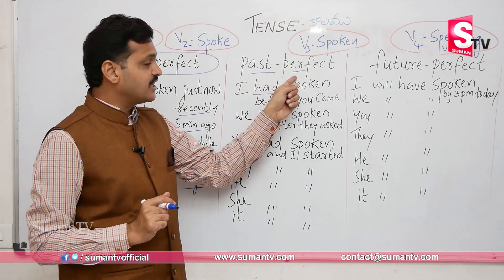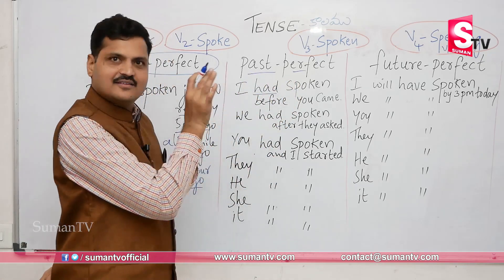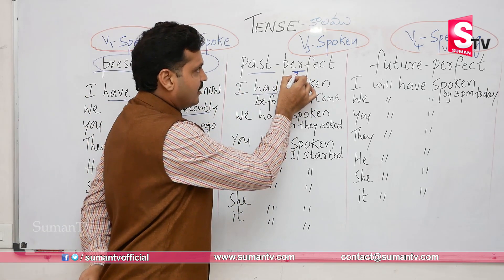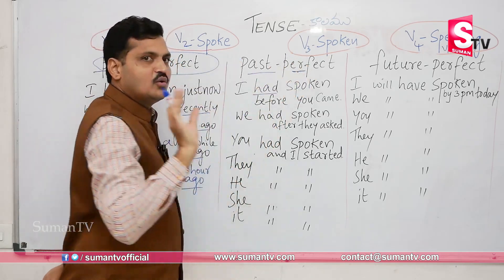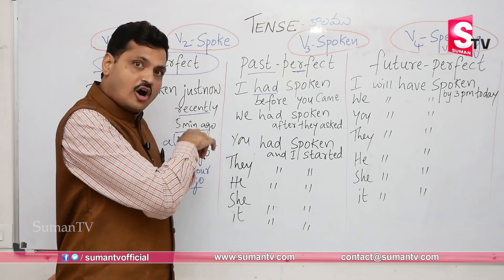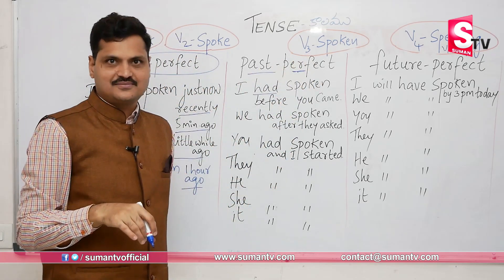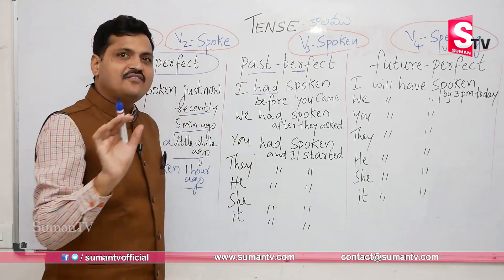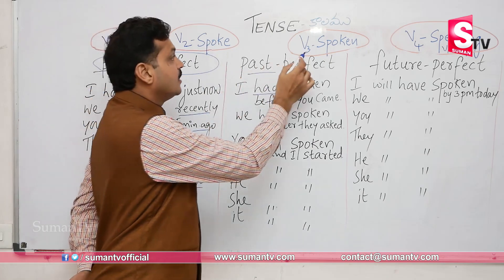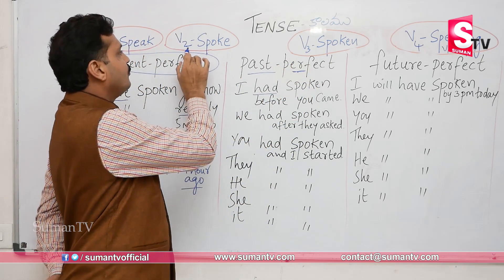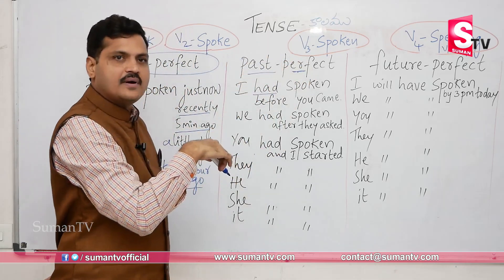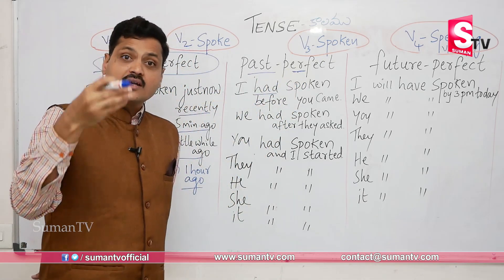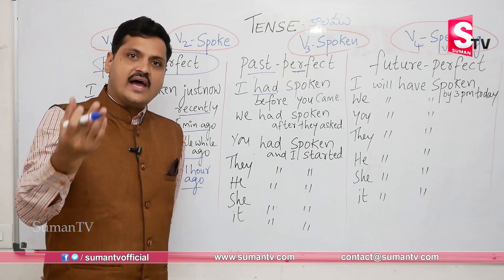Now let's look at past perfect. In general, past uses V2, but in past perfect we use V3 (had + V3). Both V2 and V3 refer to past, but V2 is long past and V3 is recent past. Past perfect is used when two actions were completed in the past — one action was completed before the other. We use 'had V3' for the earlier action and V2 for the later action.